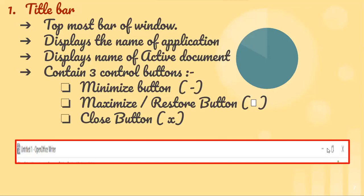At the right side of the title bar there are three buttons. The first is the minimize button. The second is the restore or maximize button — they are switching buttons. The third is the close button, the cross, which is used to close your document.